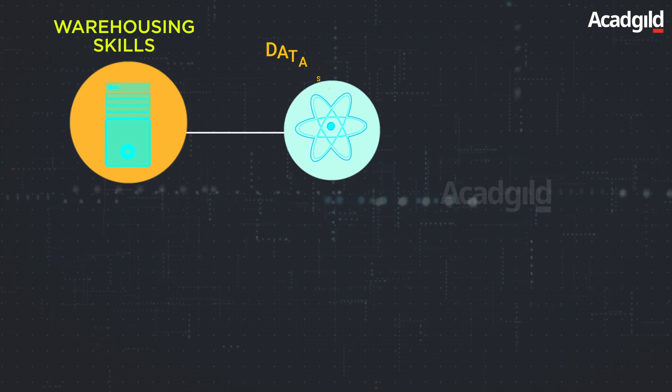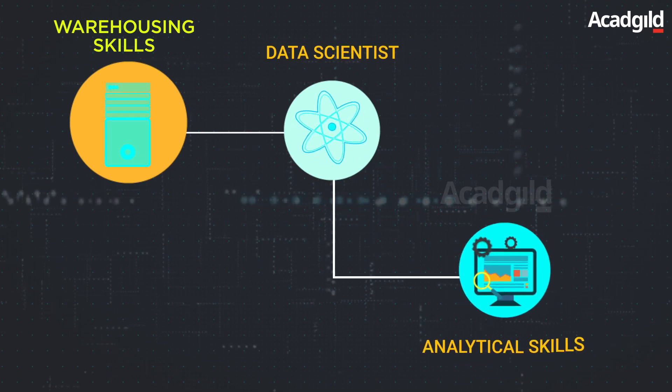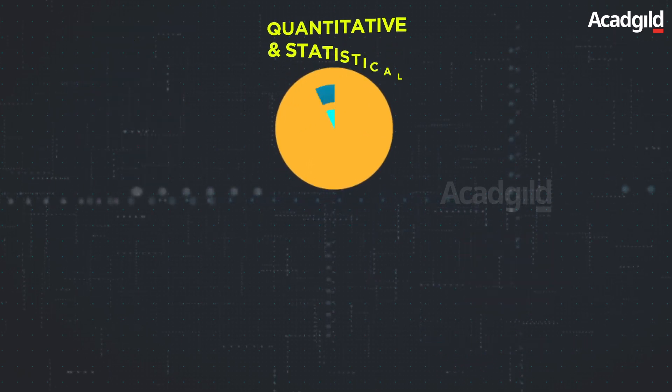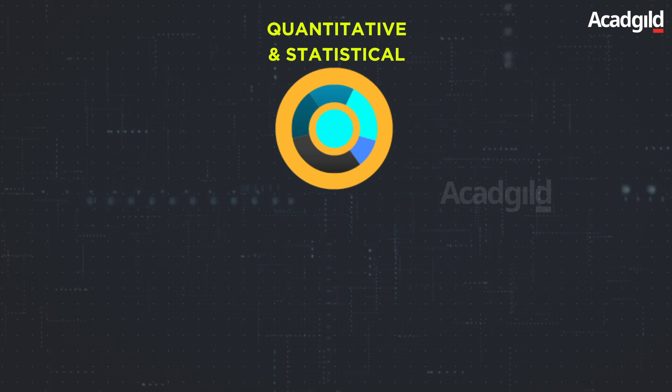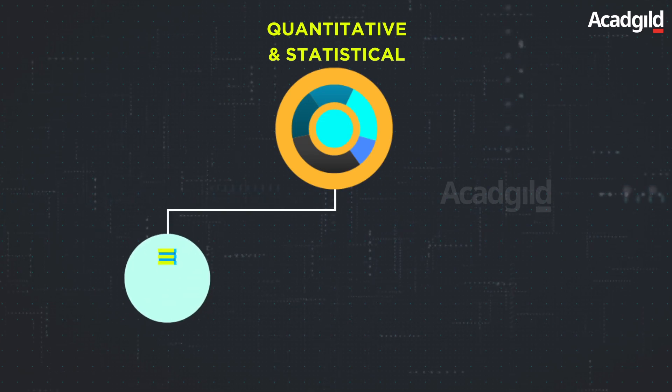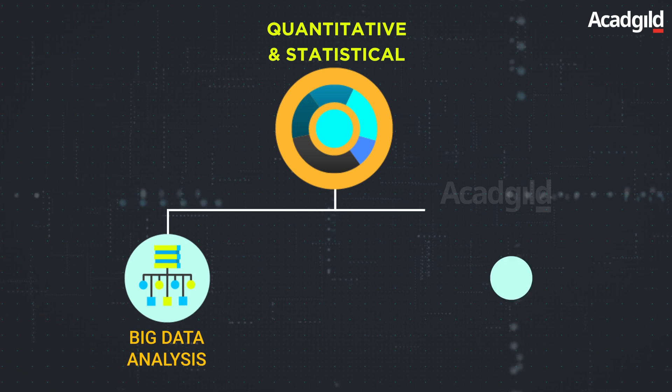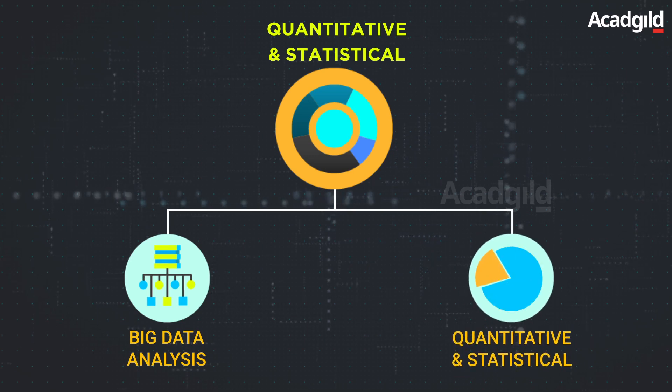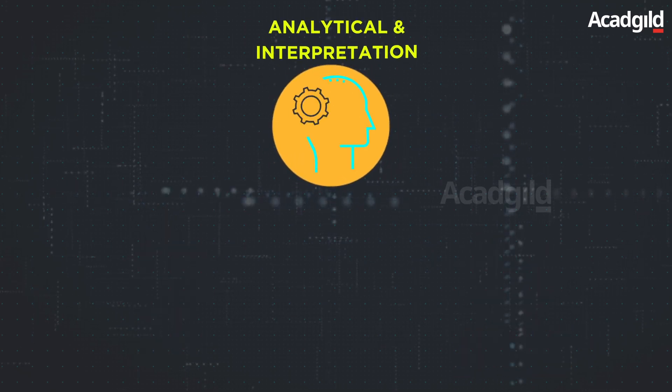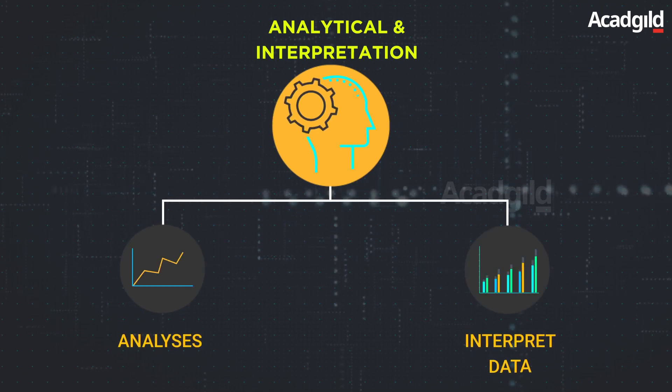Warehousing skills: Data scientists must possess good analytical skills. Quantitative and statistical skills: As technology is a key aspect of big data analysis, quantitative and statistical skills are essential. Analytical and interpretation skills: knacks to analysis and interpret data.